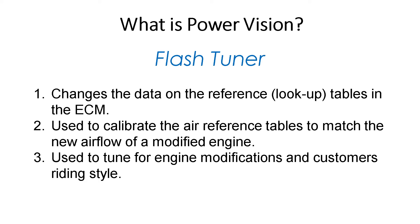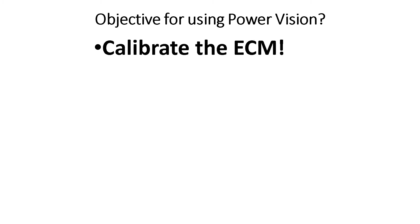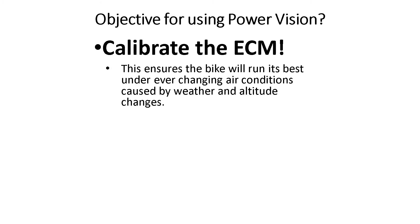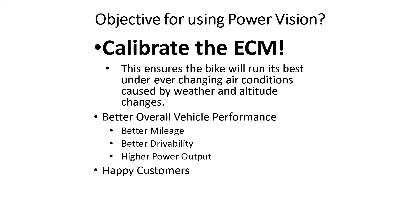We can also calibrate it to match the changes that we make to the motorcycle, from cams and exhaust and so on. The objective for using the Power Vision is to calibrate the ECM. This ensures the bike will run its best under ever-changing air conditions caused by weather and altitude changes, giving us better overall performance, better gas mileage, better drivability, higher power output, happy customers, and improved sales and service.